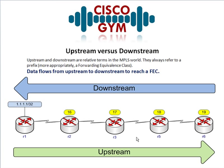The advertisement of the label associated with the prefix goes upstream, which makes sense. I can see Cisco creating exam questions based on relative position. For example, if you're on R3 and they ask about R5 — R3 is downstream from R5, and R5 is upstream from R3. Just imagine the destination prefix is the lowest point and everything flows downstream. It's not a hard concept, but it's something you'll see in Cisco documentation and it's perfect fodder for the MPLS exam.